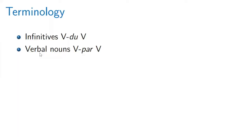Just a terminological issue to start with: I call an infinitive when I have a verb followed by the suffix du followed by a verb, and I call a verbal noun when I have a verb followed by the suffix par followed by another verbal noun. Par is definitely some kind of nominalizer — a nominalizer in the terminative case. So this is the terminology I use: infinitives and verbal nouns.